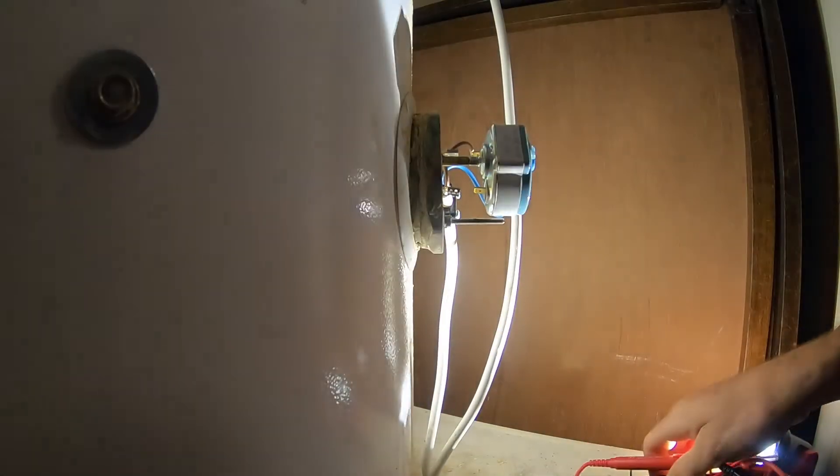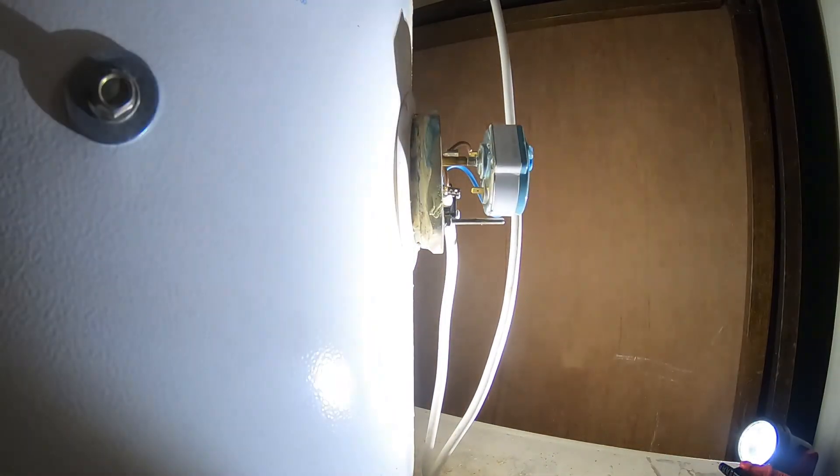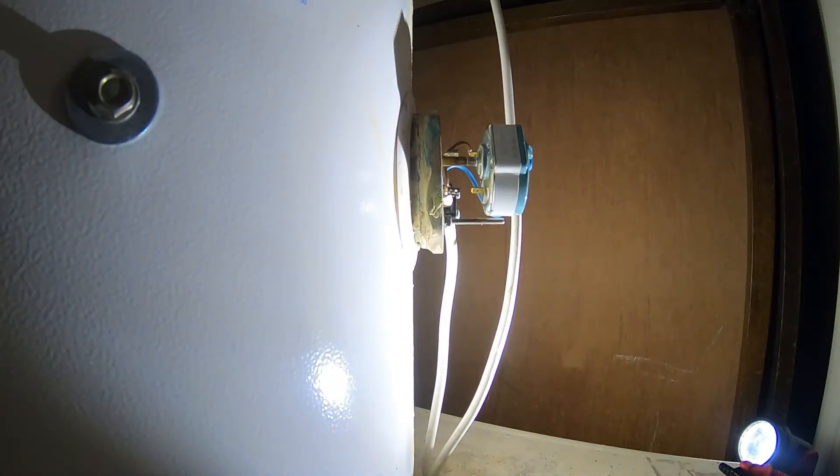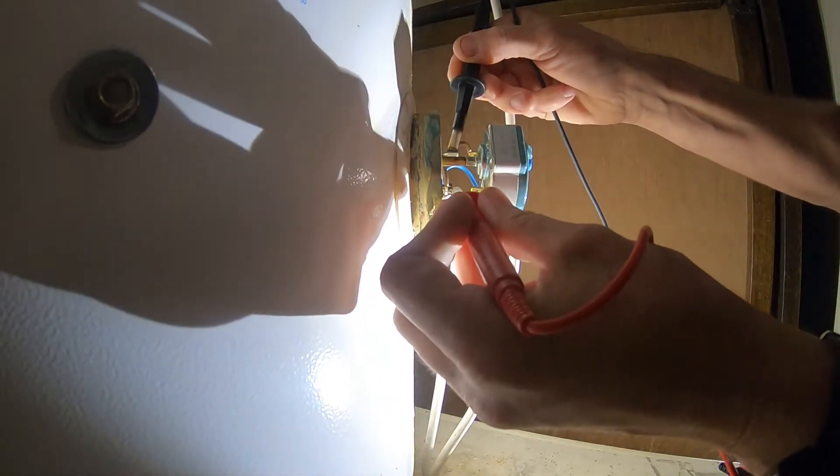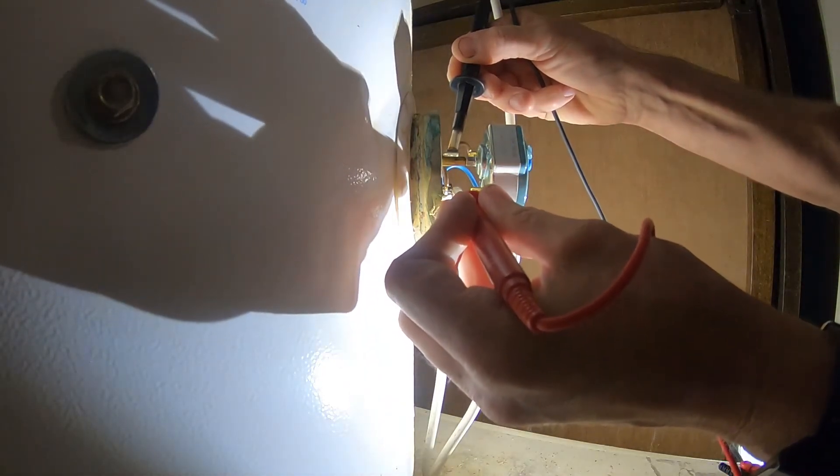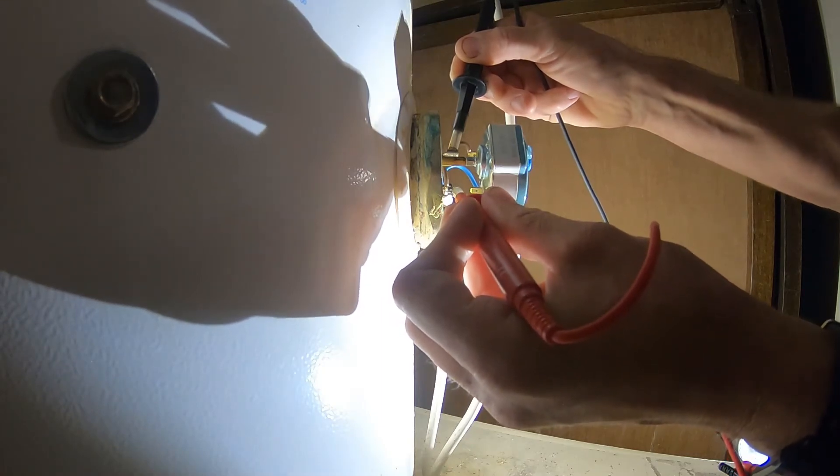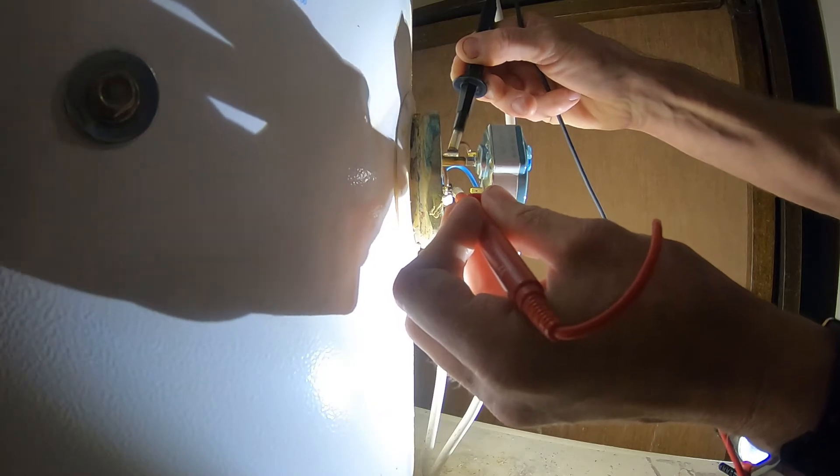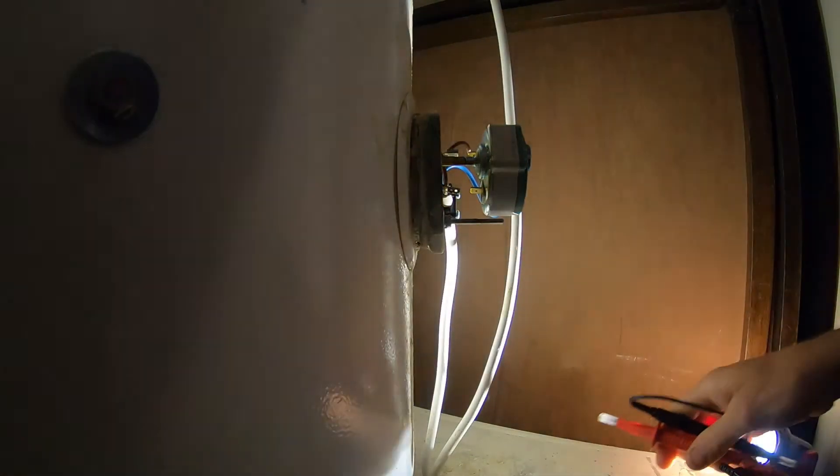that's testing out to be okay. What we'll now do is check the actual element. So we'll set the meter to 200 ohms and we should get a reading. Yeah, we've got 22 ohms which is about right, so it looks like the heater element hasn't failed. So it looks like this little lot is actually working.